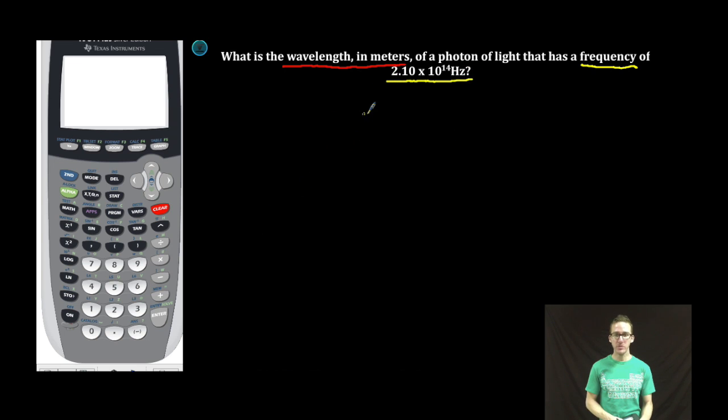Now, in order to solve this problem, we need an equation that relates frequency and wavelength. Luckily, we've got one. It is C equals wavelength times frequency. Speed of light equal to wavelength times frequency. C equals lambda times nu.